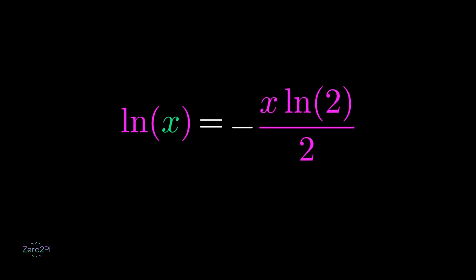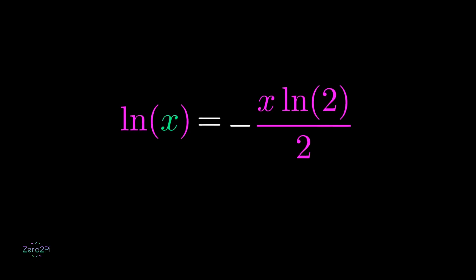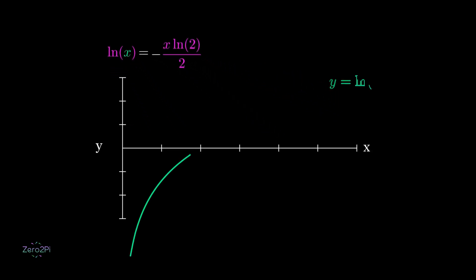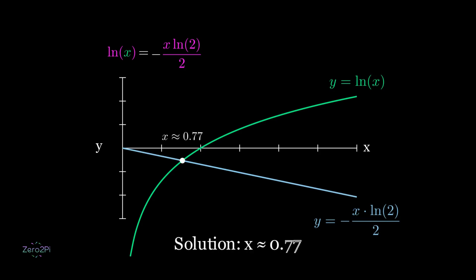Let us now make a graph showcasing this equation with two distinct lines, where the green line represents the natural logarithm of x, and the blue line represents the second expression. The first solution is x equals 0.77.